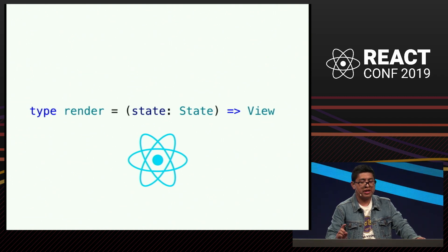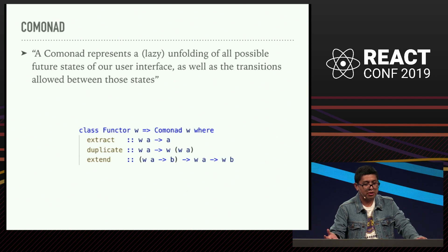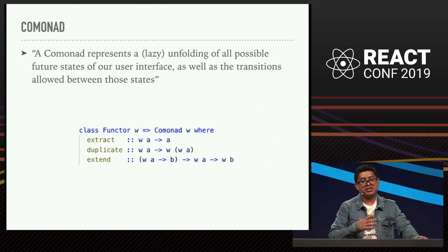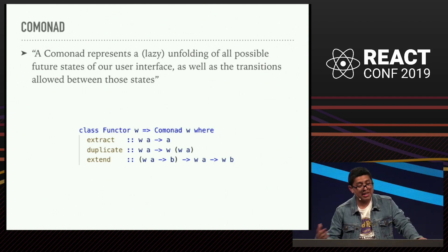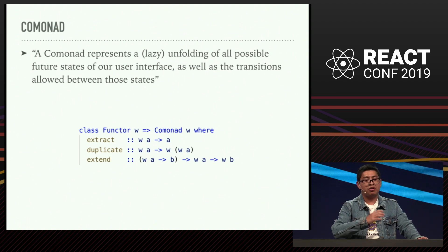We should also check the next concept: what is a CoMonad? It's not a simple Monad. A CoMonad represents a lazy unfolding of all possible future states of a user interface, as well as the transitions allowed between those states. And there you have the type class definition for a CoMonad in Haskell.